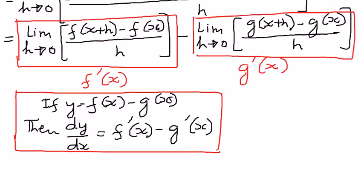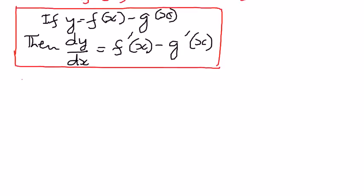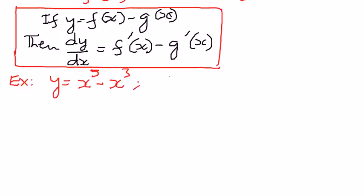That is how we understand the proof. Now let us look at a simple example based on this. Let's say we have a function y is equal to x to the power of 5 minus x to the power of 3 — the difference of two functions. We want to find dy by dx; we want to differentiate this function with respect to x.